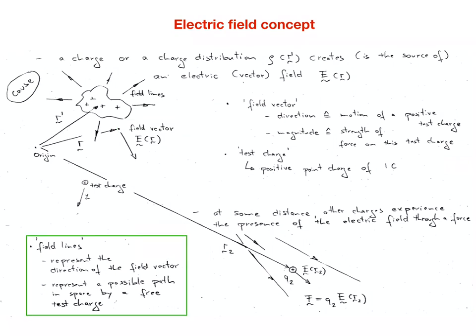Having introduced the field vector E, the field lines can therefore also be seen as representing the direction of this field vector at a particular point in space and indicating the path the test charge would take under the influence of this field vector.